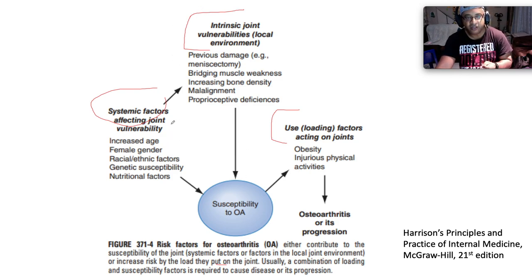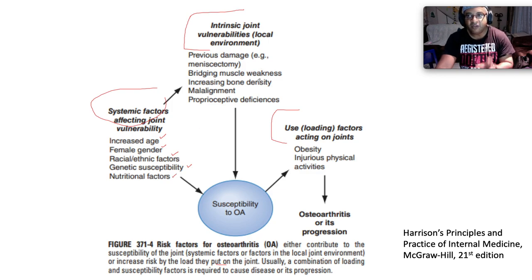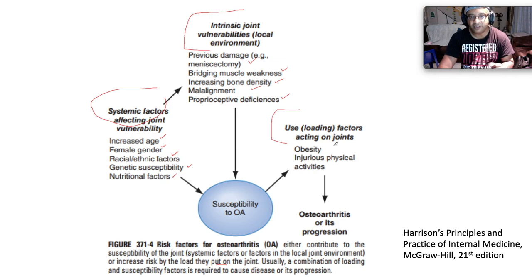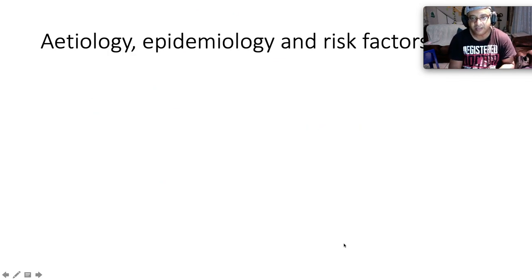Systemic factors affecting joint vulnerability include increasing age, female gender, racial or ethnic factors, genetic susceptibility, and nutritional factors. Intrinsic joint vulnerability speaks to the local joint environment — previous joint damage, muscle weakness, increasing bone density, malalignment, or proprioceptive deficiencies. Loading factors include obesity and injurious physical activities, all of which lead to osteoarthritis or its progression.